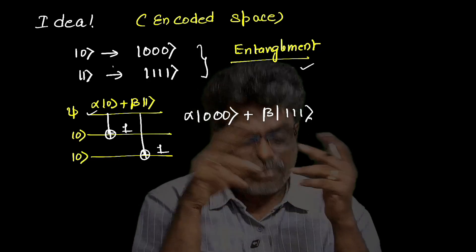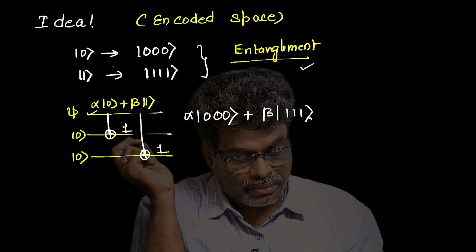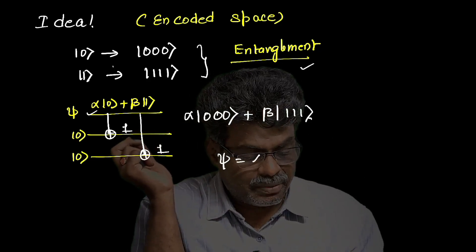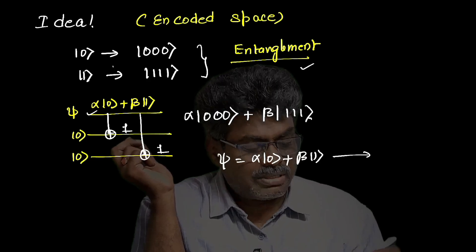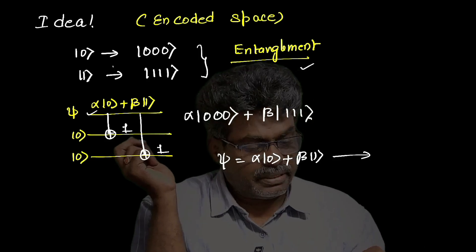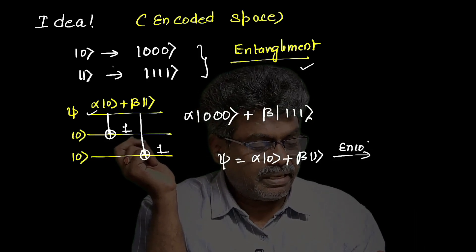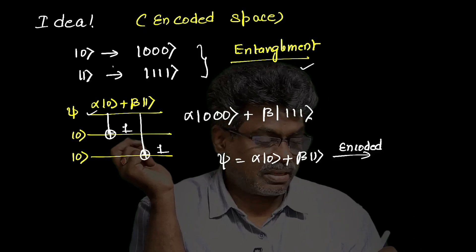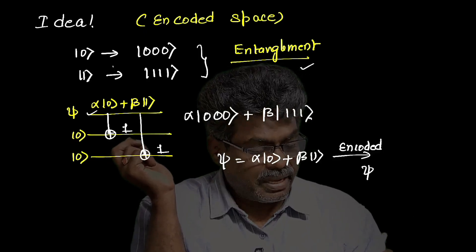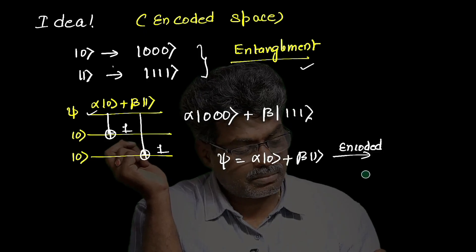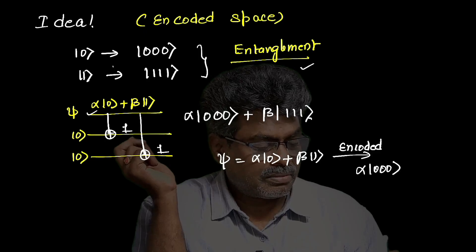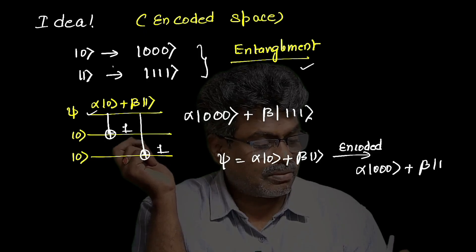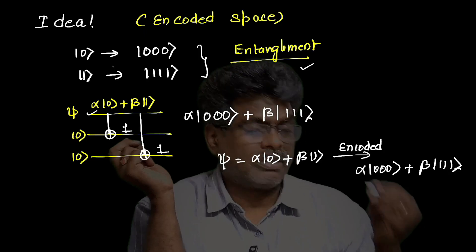The basic idea: if you have quantum information |ψ⟩ = α|0⟩ + β|1⟩, it is encoded as α|000⟩ + β|111⟩.